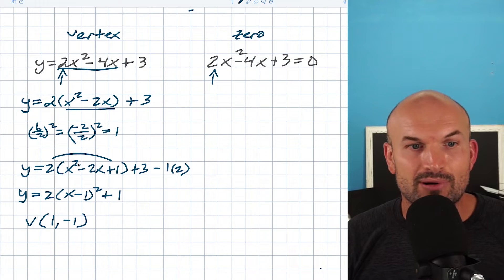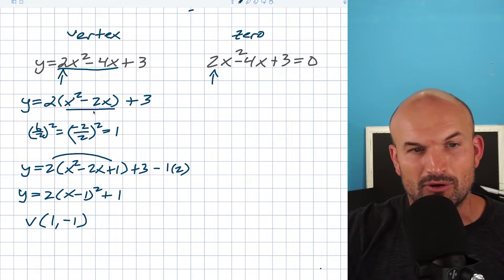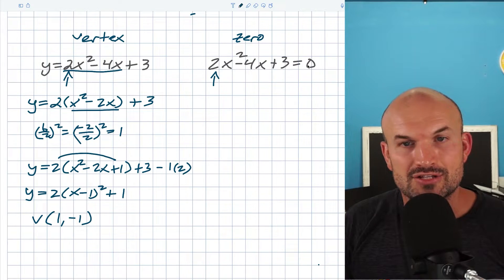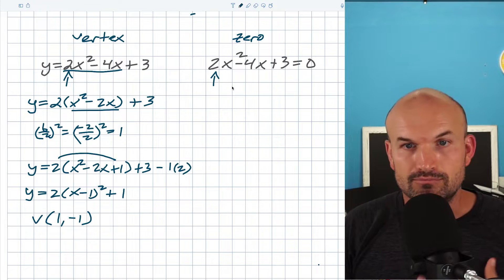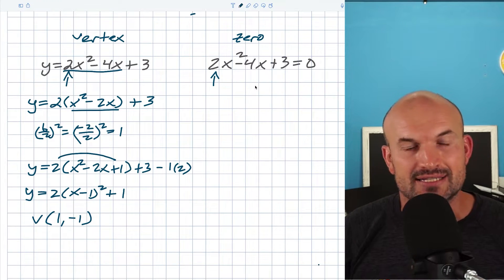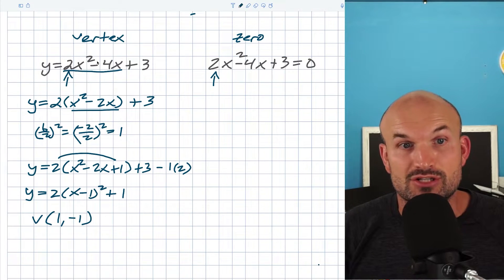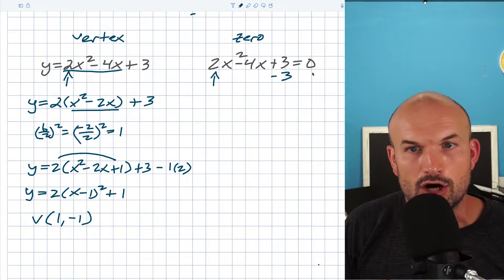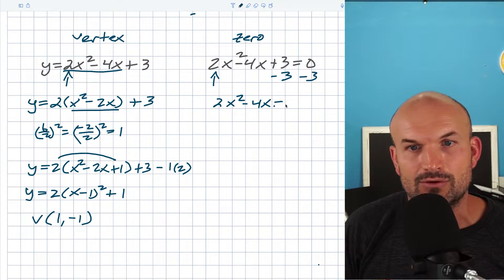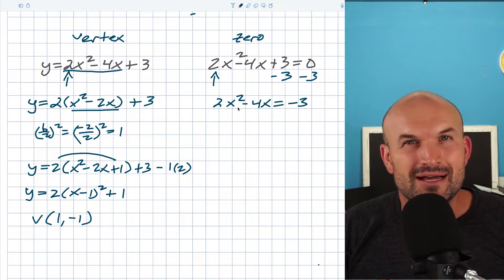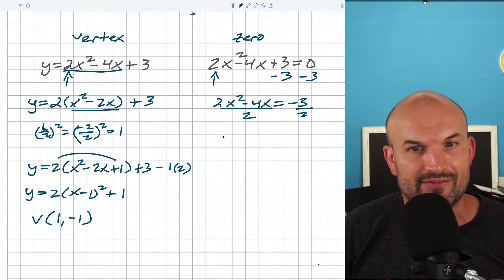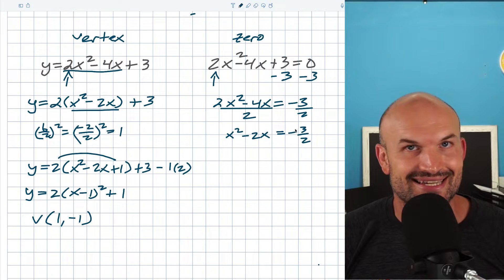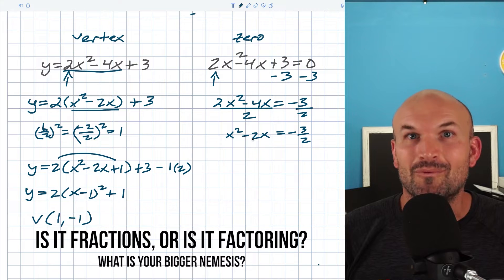The problem with the first method was the factoring, and a lot of students have trouble factoring out the two — that's where they get stuck. That's why this next method is actually preferred by many, because we're not going to deal with factoring. In this case, we're trying to solve for x. To avoid factoring, what I can do is divide by two. But first, I want to isolate the x squared and x terms — moving the three to the other side gives 2x squared minus 4x equals negative three. Now, is it fractions or is it factoring — what is your bigger nemesis? Dividing by two on both sides gives x squared minus 2x equals negative three halves.